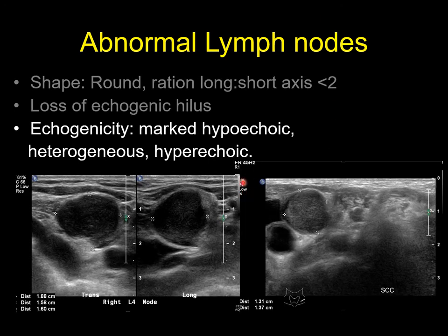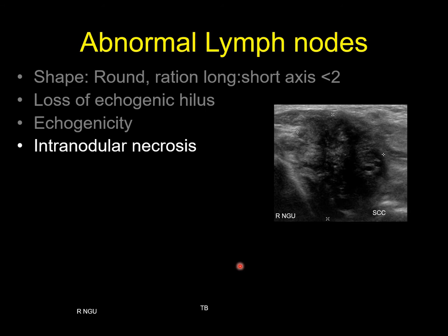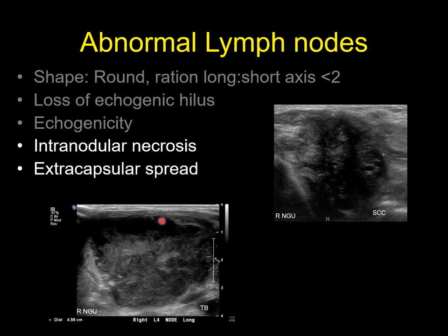Other signs of abnormal lymph nodes are that they tend to be markedly hypoechoic, they can be heterogeneous, or they could be hyperechoic, as you can see here. Other features of abnormal lymph nodes include intranodular necrosis, and here you can see the intranodular necrosis. If you look carefully, there is also extracapsular spread of the node.